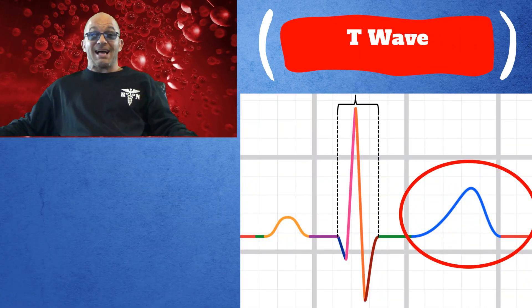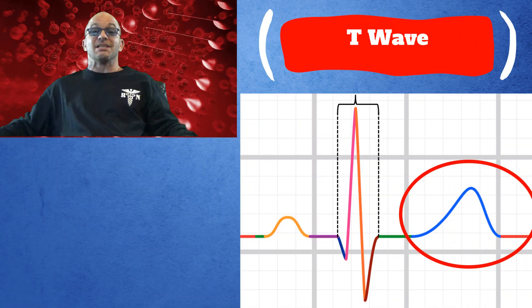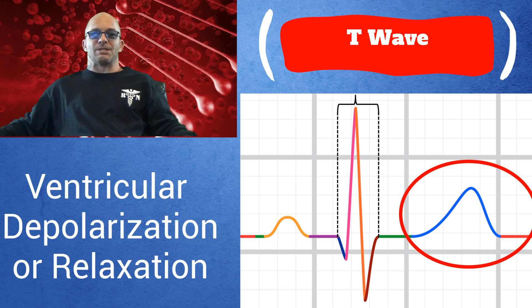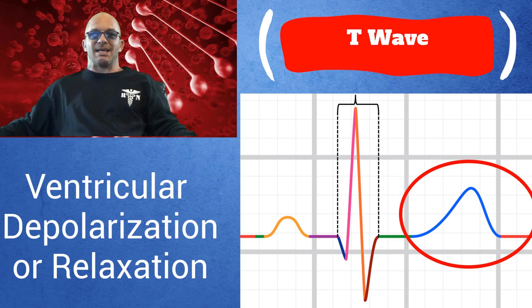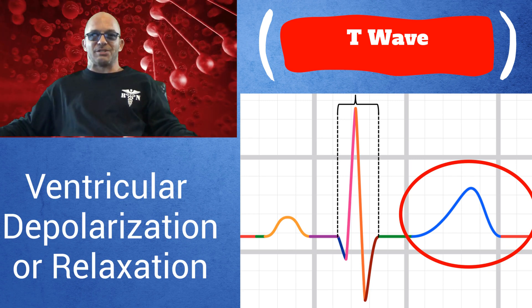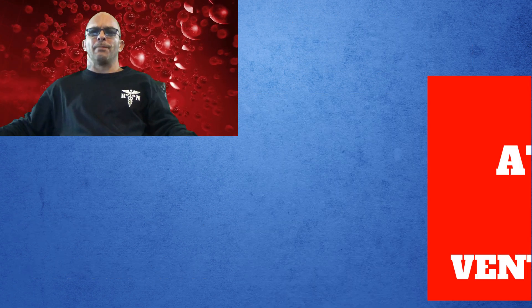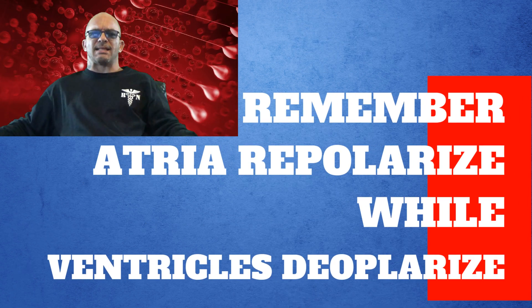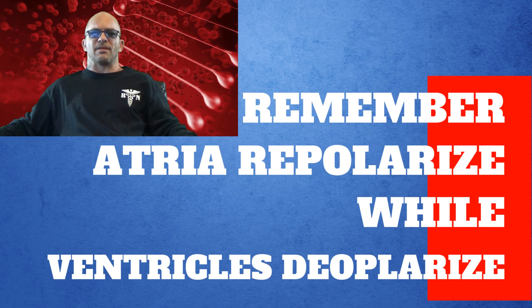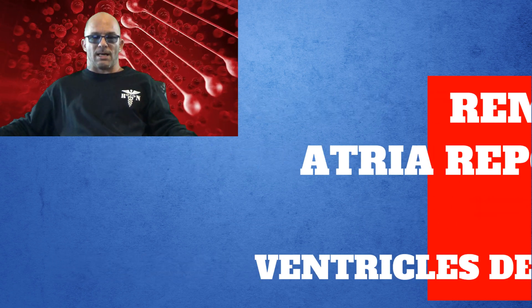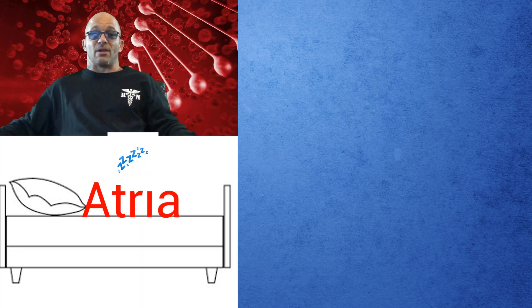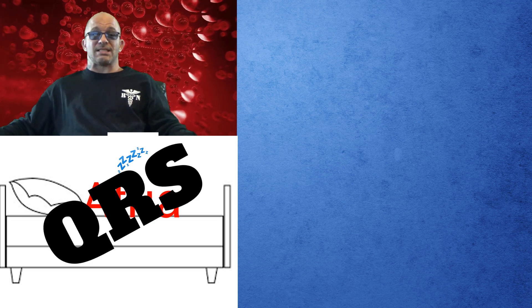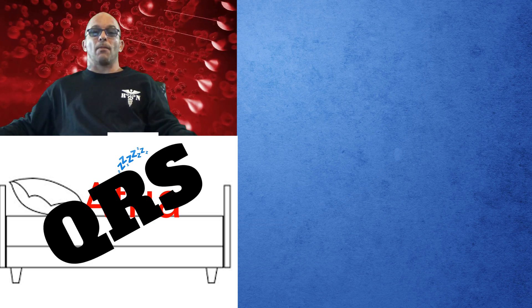The last wave, which is the T wave, indicates repolarization or relaxation of the ventricles. Remember, the atria are repolarized at the same time the ventricles are depolarized, and the larger QRS complex hides the atria's resting wave presence.